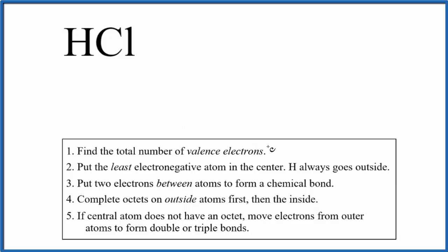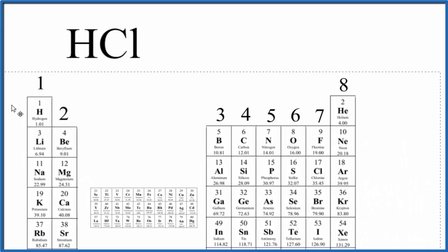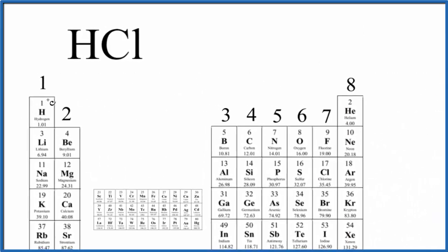So let's first count up the valence electrons, the total number of valence electrons for HCl. We look at the periodic table, we can see hydrogen right here is in group one. All of these have one valence electron.